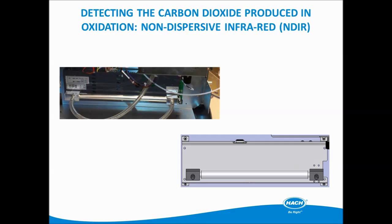Non-dispersive infrared detectors measure carbon dioxide by determining the amount of light absorbed across a known distance. The Hach QBD-1200 uses new digital NDIR technology, where the IR source is now semiconductor-based instead of the old-style incandescent, ensuring stability over time.